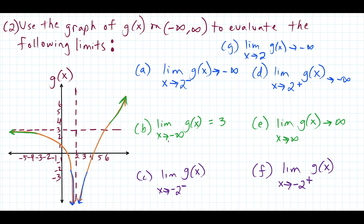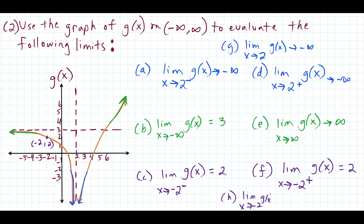The last set of questions: the limit as x approaches negative 2 from the left side. In the neighborhood of x equals negative 2 the graph is completely connected, so when the graph is continuous all you have to do is look at the point, which is negative 2, 2. The limit is just the y value. The limit as x approaches negative 2 from the left is equal to positive 2, and the limit as x approaches negative 2 from the right is also equal to positive 2. So the limit as x approaches negative 2 of G of x is equal to 2 because the left and right side limits are equal.